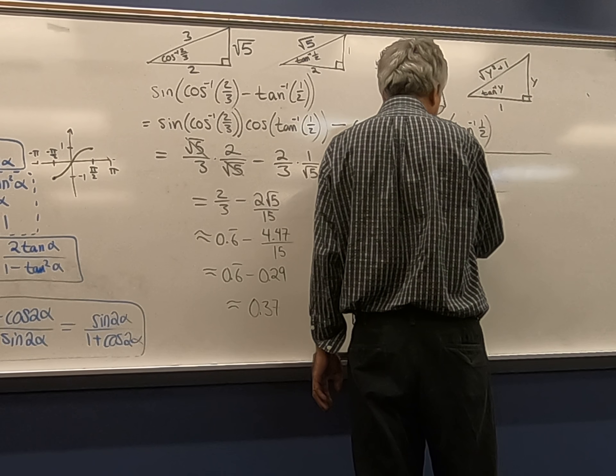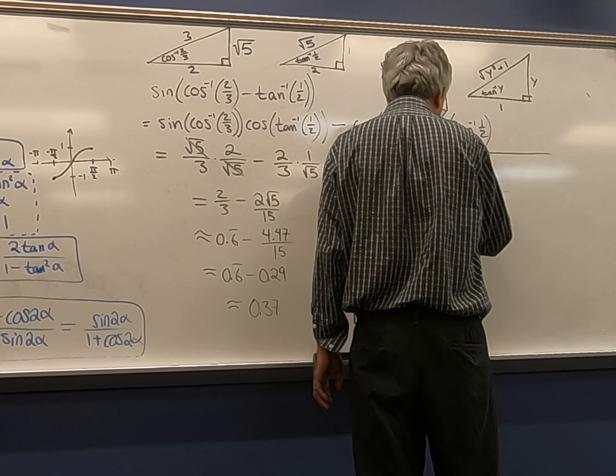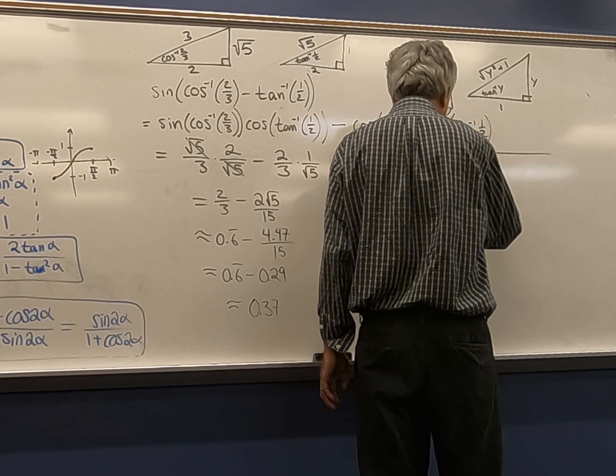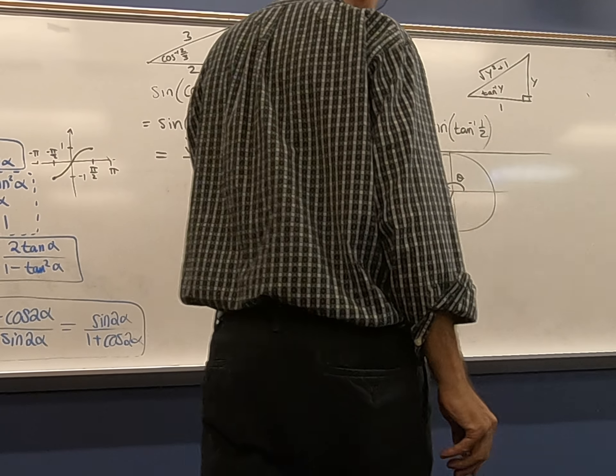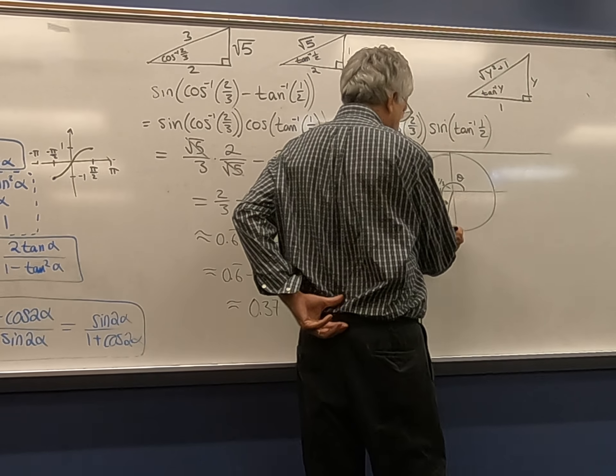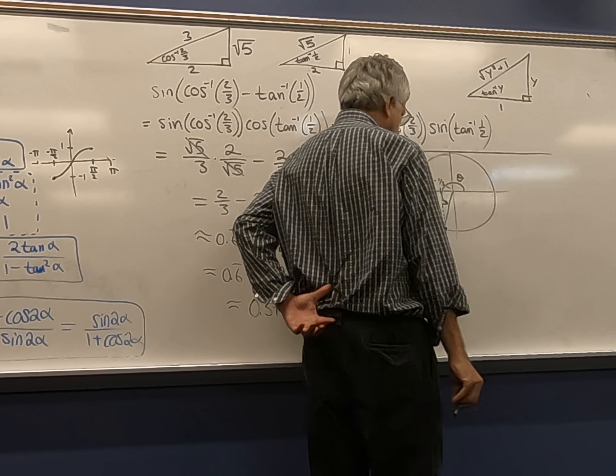If the cosine, that means the x-coordinate is negative one-third. That means that this is our angle theta, right? It's dialing us around to where we're in the third quadrant with x-coordinate negative one-third.